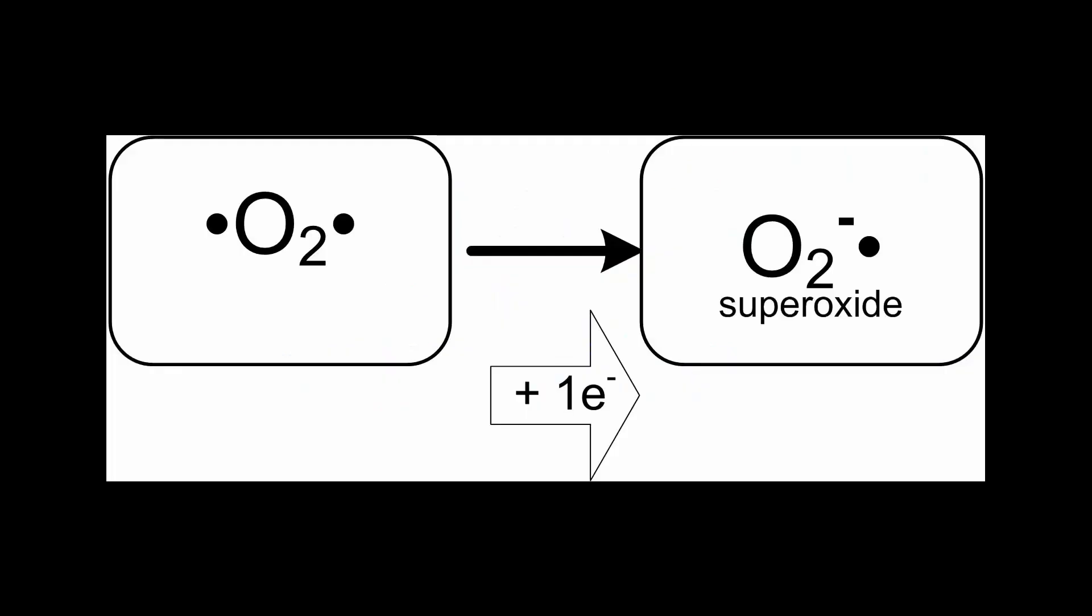Superoxide is the first step in reducing oxygen. So superoxide has a charge of negative one because it has taken on an electron. One electron added to oxygen takes it from being a dual free radical with no net charge to being a free radical having a single unpaired electron and a minus charge.